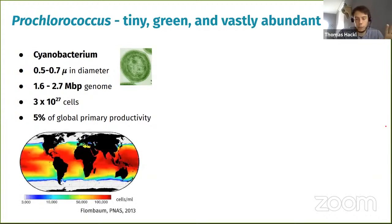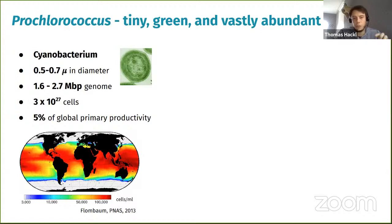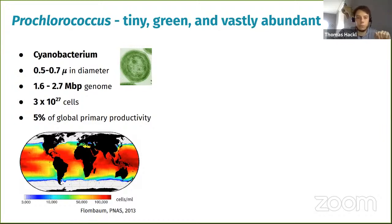To illustrate the abundance and global scale of these organisms, this is a projection of abundance of cells across global oceans. You can see it goes along the tropical regions and branches up and down into subtropical regions, almost close to the polar circles, but then it gets too cold for these organisms to really thrive.